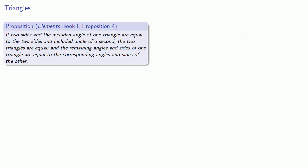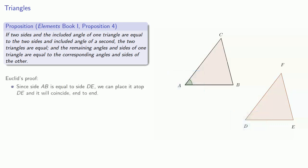So, let's take our two triangles with side AB equal to side DE, side AC equal to side DF, and the included angle BAC equal to the angle EDF. Now, since side AB is equal to side DE, we can place it atop DE and it will coincide end to end.